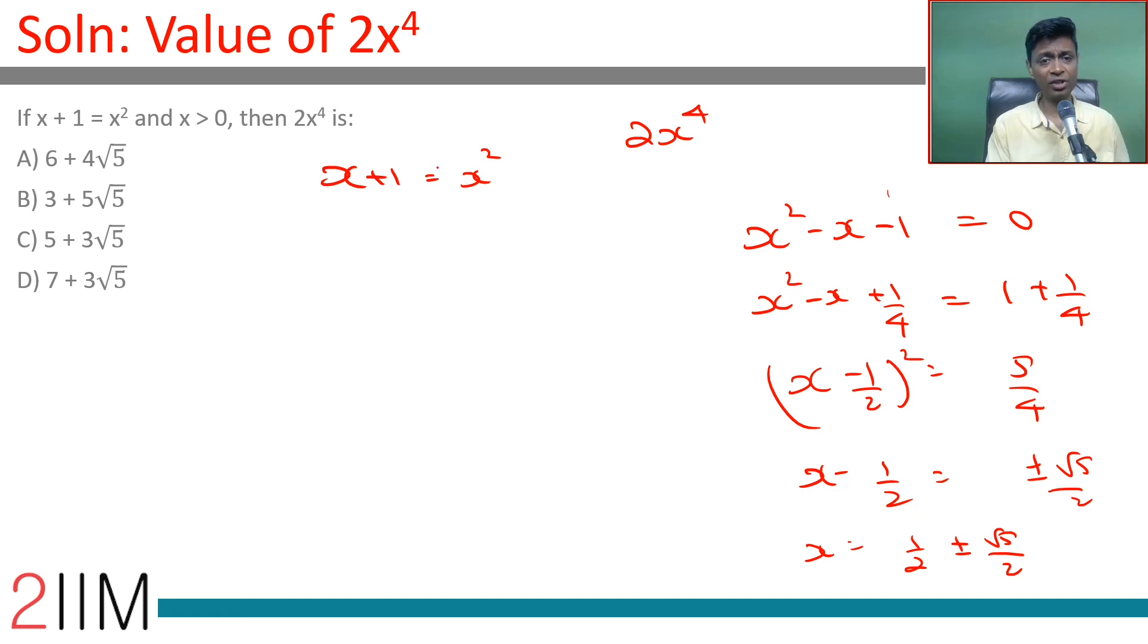We have x² here, so square this: x⁴ = (x²)² = (x + 1)² = x² + 2x + 1. Since x² = x + 1, we get (x + 1) + 2x + 1, so x⁴ = 3x + 2.